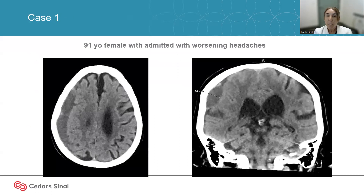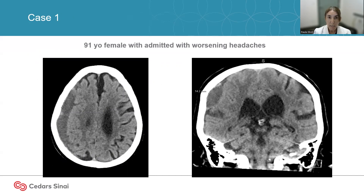We're going to go over a case in a stepwise fashion. This is a 91-year-old female admitted with worsening headaches and balance issues. On head CT she has a chronic subdural hematoma with a small subacute component and some midline shift. Given that her symptoms were mild and her advanced age, we offered middle meningeal artery embolization.